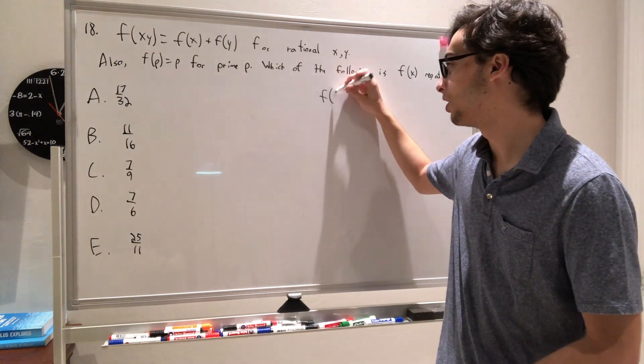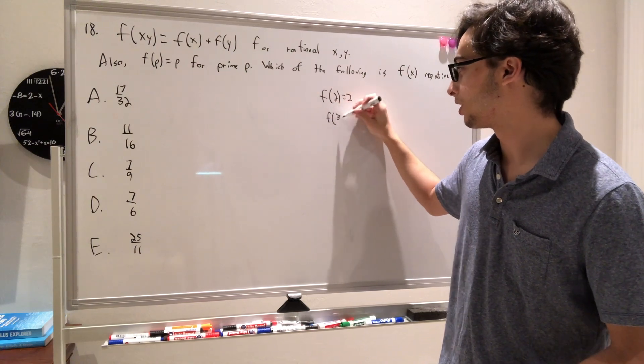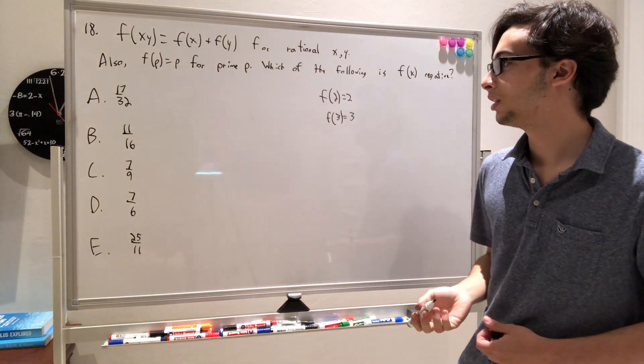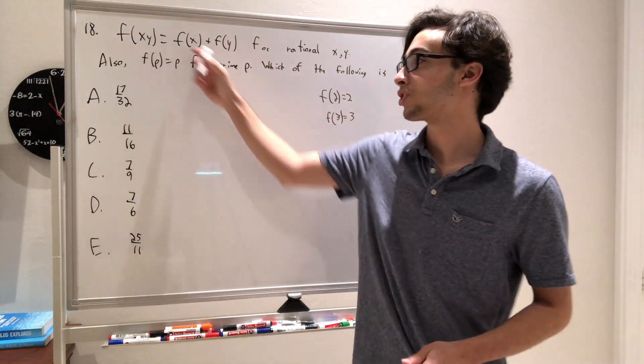We know f of 2 is equal to 2, f of 3 is equal to 3. Well, what about f of 1? Do we know anything about f of 1? Well, if we think about it, we know that, let's use this first rule.